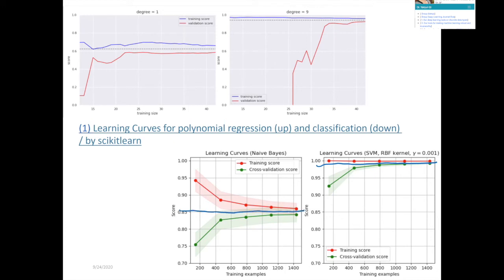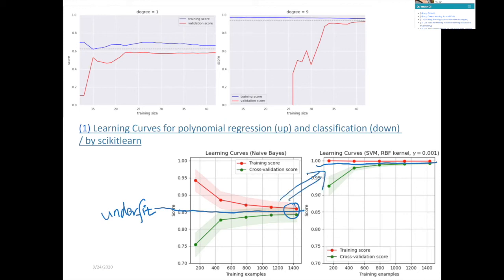In the naive Bayes method, training and testing converge to about a score of 0.85, while SVM is higher. Both training and testing are very similar — very close together — but they're all performing at a relatively lower level. This indicates underfitting. The naive Bayes model and the initial simpler model have training and validation very close together but both bad, which means underfitting. When you try a more complex model, both training and validation improve dramatically.